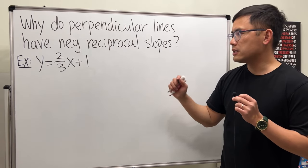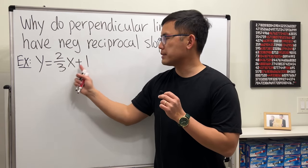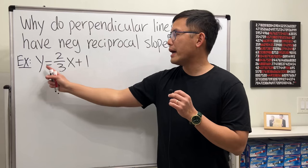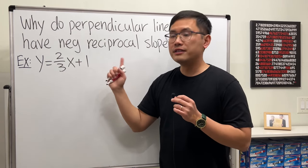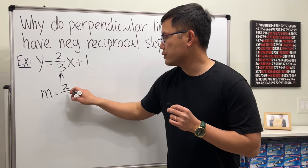So what I mean by this is the following. Suppose we have this equation, y equals 2 over 3x plus 1, which is just a linear equation in the form of y equals mx plus b. We know the slope, which is just the m, and that's just 2 over 3.